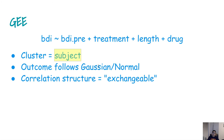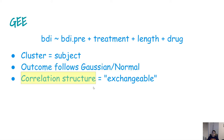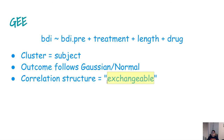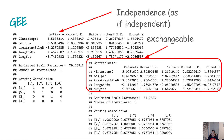In GEE we use the general form of regression, but we have to specify the cluster — whether it is the subject or time — and we have to specify the outcome distribution, whether it is normal or binomial. We also have to specify the correlation structure. For example, if exchangeable correlation is appropriate, you can use that. You can also use independence and compare it with exchangeability — you only need to change the correlation structure specification.